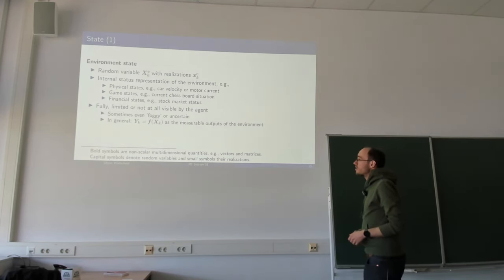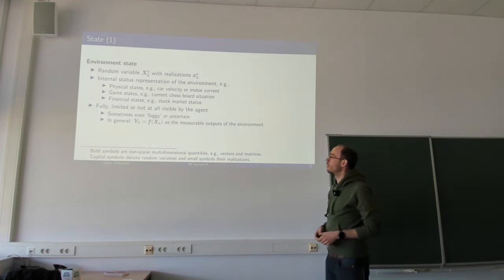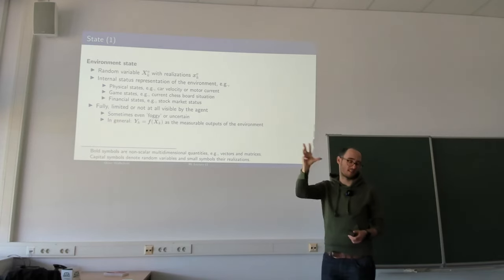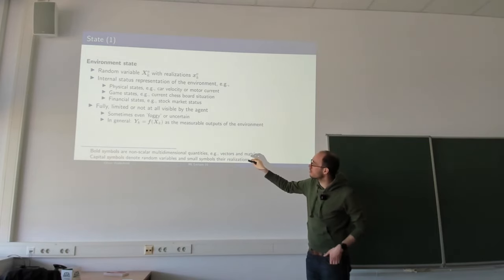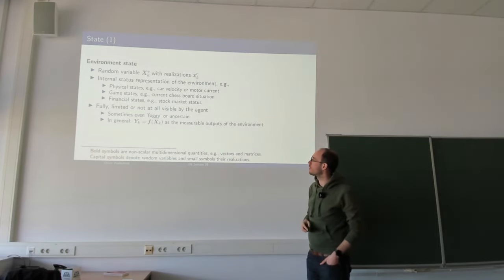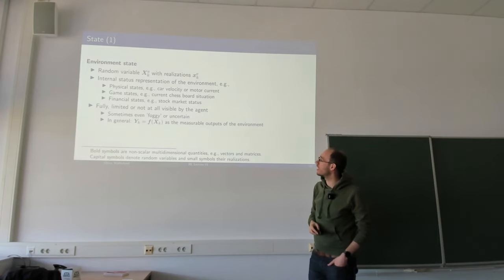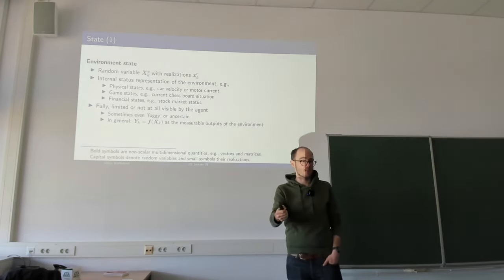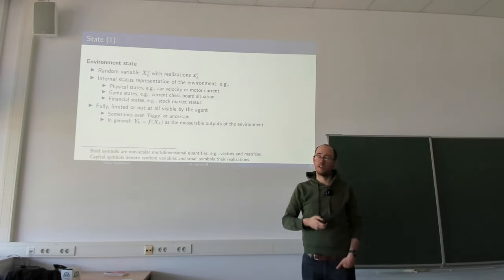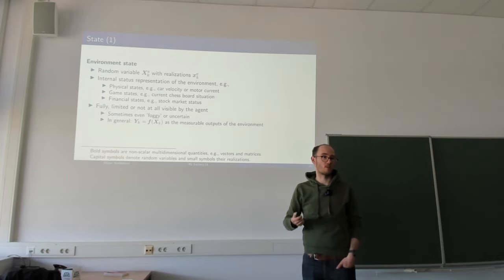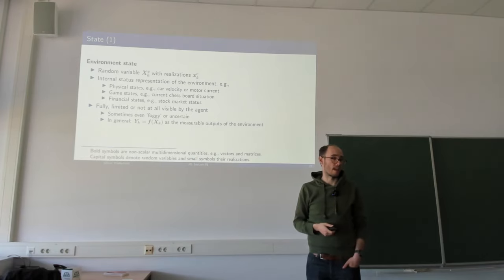In terms of the agent, this state might be fully visible or not. There might be some measurement function F from the state space to the measurement space, which I call Y of K, presenting measurements to the agent regarding the state. This could be a one-to-one mapping in the simplest case, or a limited viewpoint where some states are hidden to the agent.